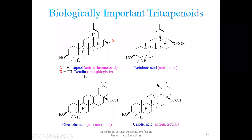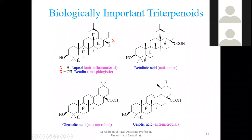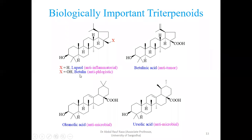Similarly, look at betulin. What is the only change between lupeol and betulin? In betulin, one of the methyl hydrogens is oxidized to an OH group. So betulin is just lupeol with one additional hydroxyl group — one oxygen difference only. Yet it has a different biological application: betulin is anti-phlogistic, meaning it also has a physiological function acting as a remedy.